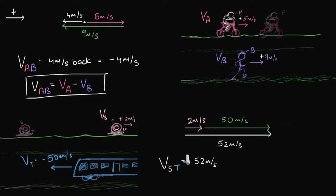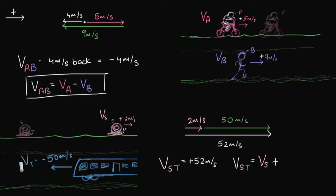The relative velocity is positive. Now let's build a formula. What we did here is two plus 50. Two is the velocity of the snail. And 50 — well, that's not the velocity of the train; it is the negative of the velocity of the train. So we added negative of Vt. Putting it together: Vst equals Vs minus Vt. There's our formula for the second case.